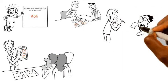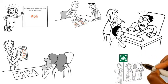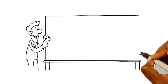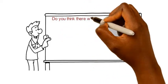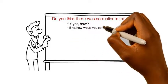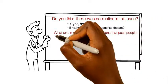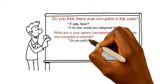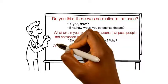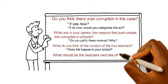The head of school reminds the teachers that he is the one who decides, and that many jobless teachers have queued up outside the school gates waiting for a job. Questions for discussion: Do you think there was corruption in this case? If yes, how? If no, how would you categorize the act? What are, in your opinion, the reasons that push people into corruption in schools? Do you justify these motives? What do you think of the conduct of the two teachers? Does this happen in your school? What should be the teacher's next line of action?